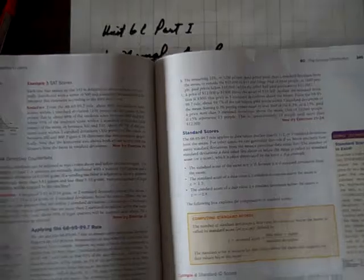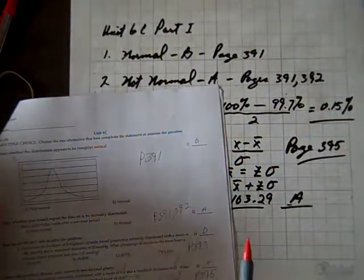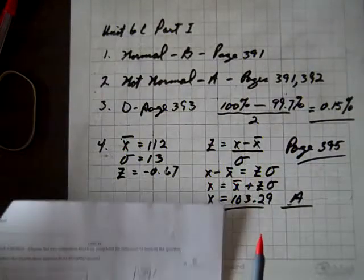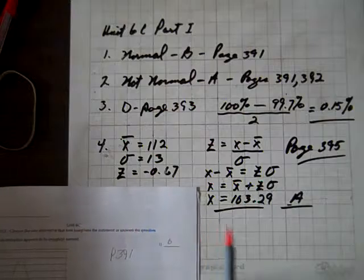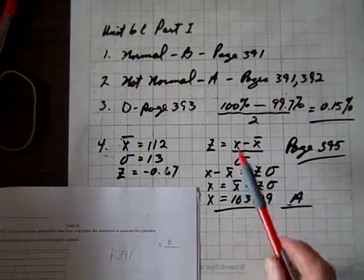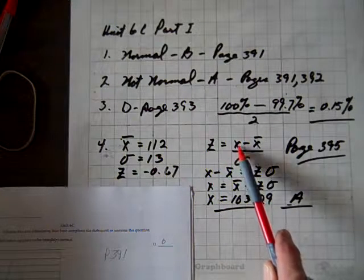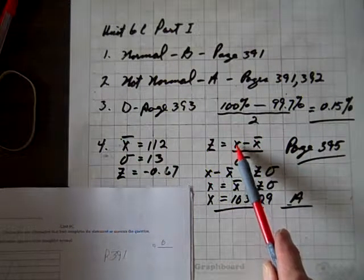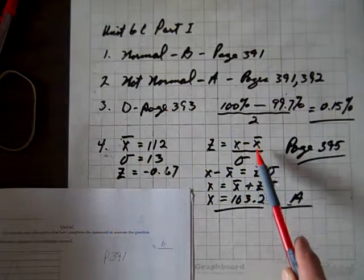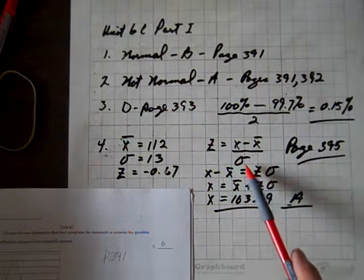So Z is the number of standard deviations below or above the mean. So we've got a Z score of negative 0.67, and here's the equation for Z: Z equals the difference of the data value minus the mean divided by the standard deviation.